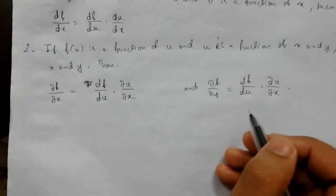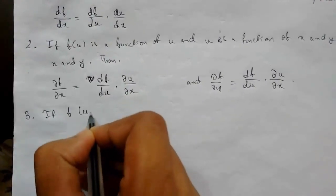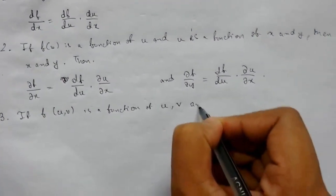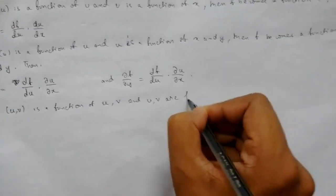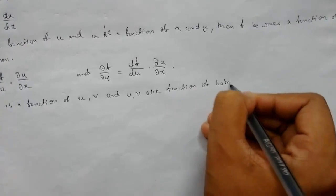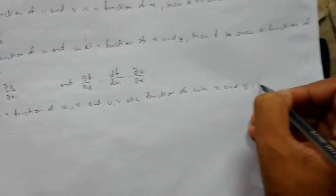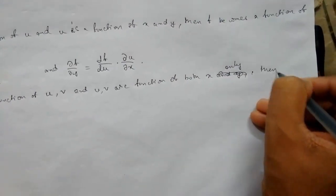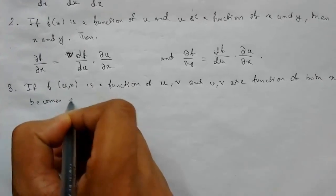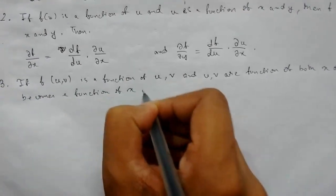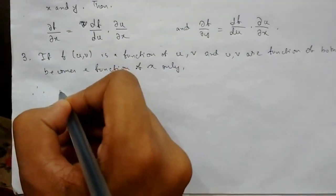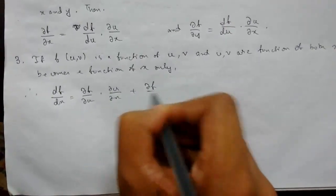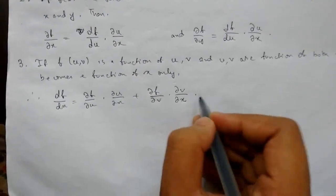Number three: if f(u, v) is a function of u and v, and u, v are functions of both x and y — considering x only, f becomes a function of x only. Therefore, df/dx equals (∂f/∂u)(∂u/∂x) plus (∂f/∂v)(∂v/∂x).